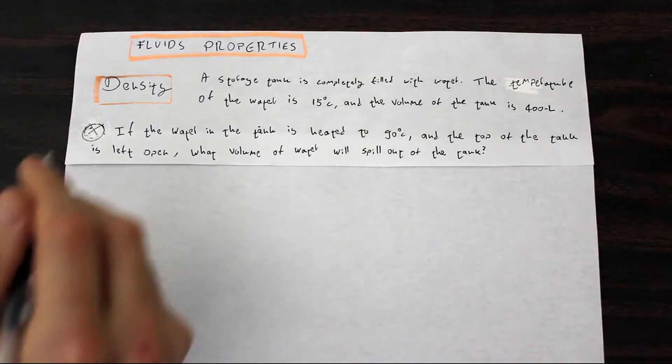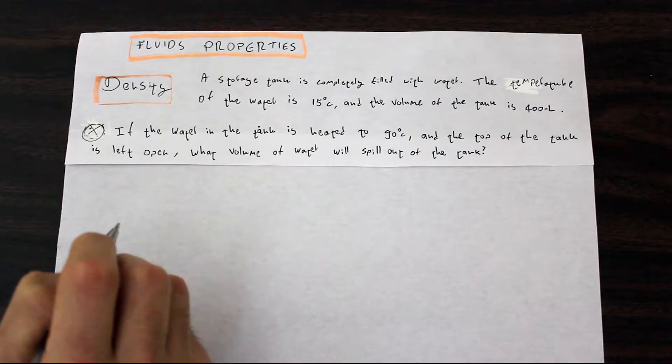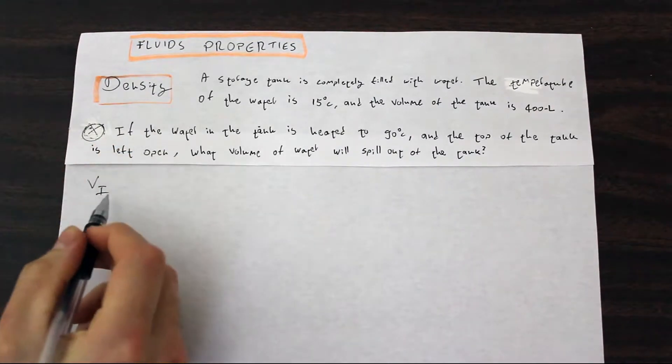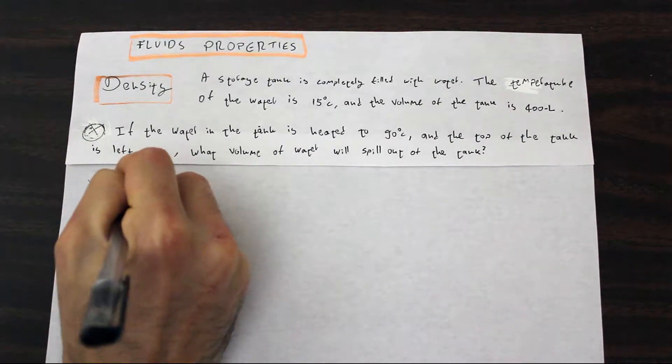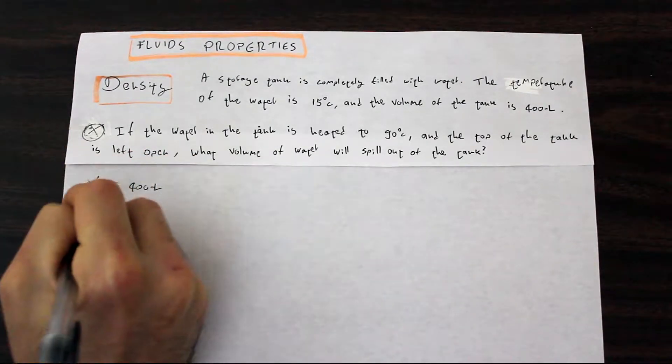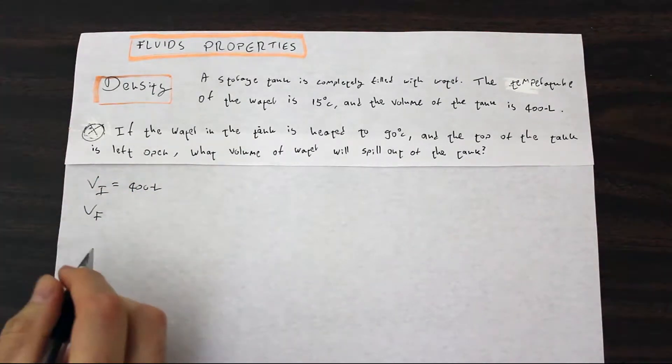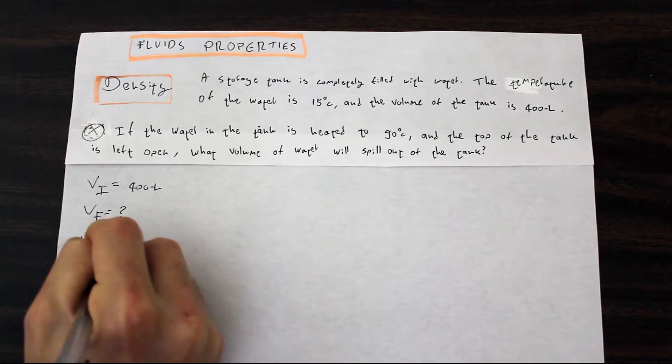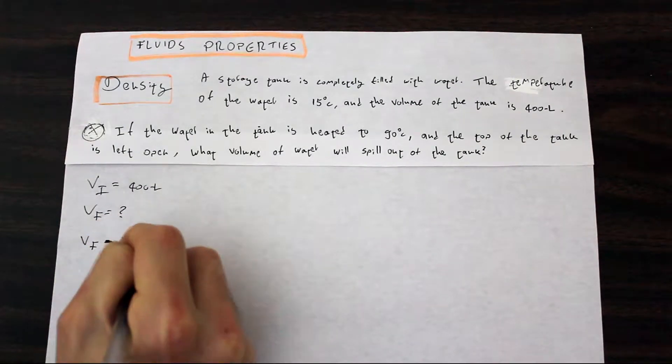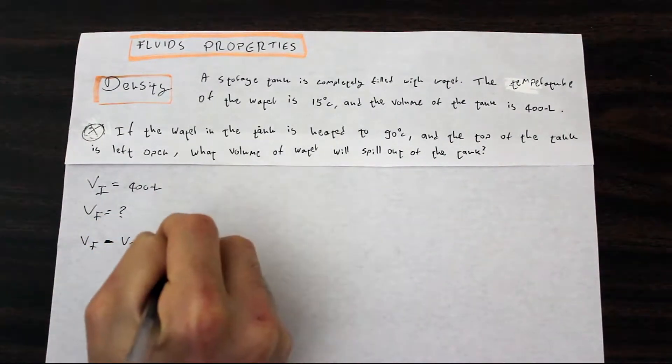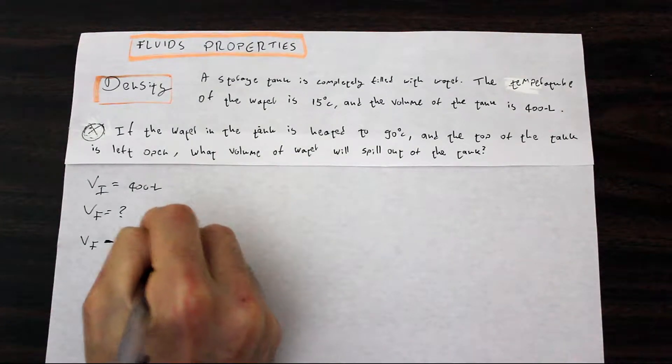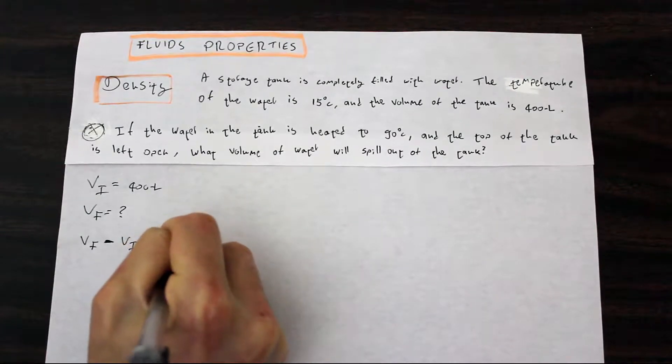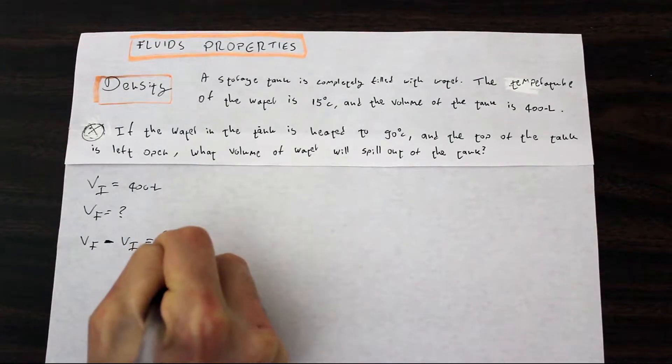Okay, so what's our strategy here? We know what is our initial volume. Our initial volume is 400 liters. If we would know our final volume, we could say that Vf minus Vi is equal to the water that will spill out from the tank.